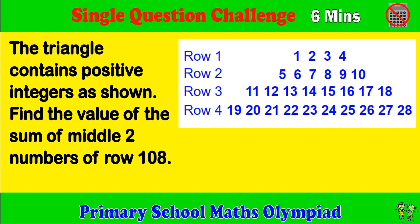Primary School Maths Olympiad. Single Question Challenge. Try to complete the question within 6 minutes. The triangle contains positive integers as shown. Find the value of the sum of middle two numbers of row 108.